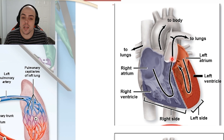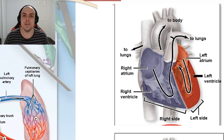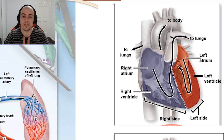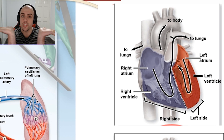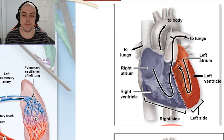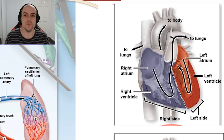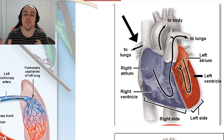From the pulmonary trunk, it is then going to bifurcate — it's going to split into two, sort of like a T-section. What that is going to do is split from the pulmonary trunk into our left and right pulmonary arteries.